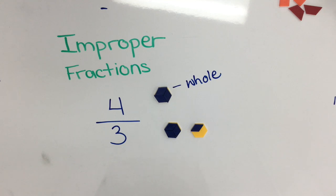If we take a look at what we've built we can see that we have one whole shape filled in with one-third left over.